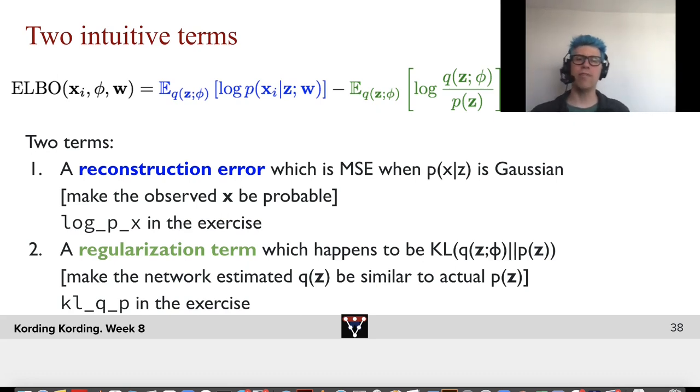Now, it has two intuitive terms. The ELBO has a first term, which is a reconstruction error, which is the mean squared error when p of x given z is Gaussian. What's the idea here? We want to make the observation x that I have, x_i, to be probable. And in the exercise, that's log p_x. And there's also a regularization term, which happens to be the KL divergence from p to q, where you can say what we want is that the network's estimated q should be similar to the actual p of z, which is KL q_p in the exercise.